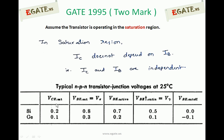For NPN transistors — silicon and germanium — the standard values are as follows. Since the transistor is in the saturation region, we use VBE saturation and VCE saturation. VCE saturation is 0.2 volts and VBE saturation is 0.8 volts.